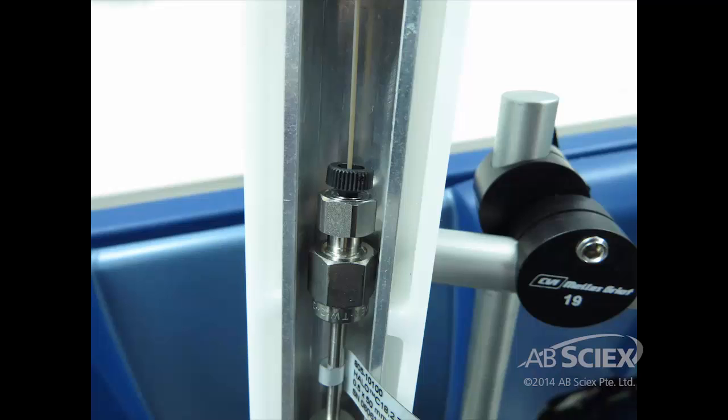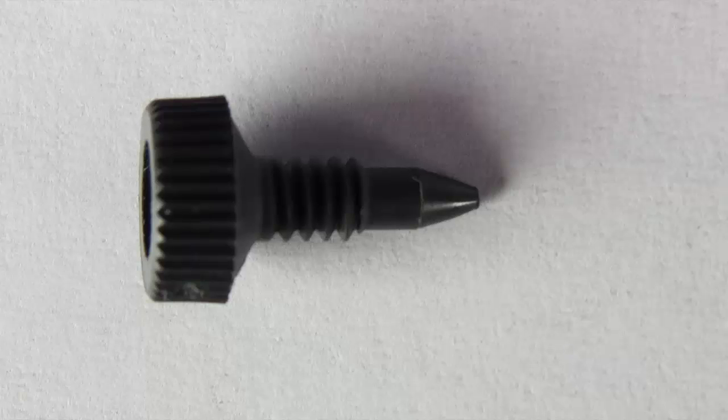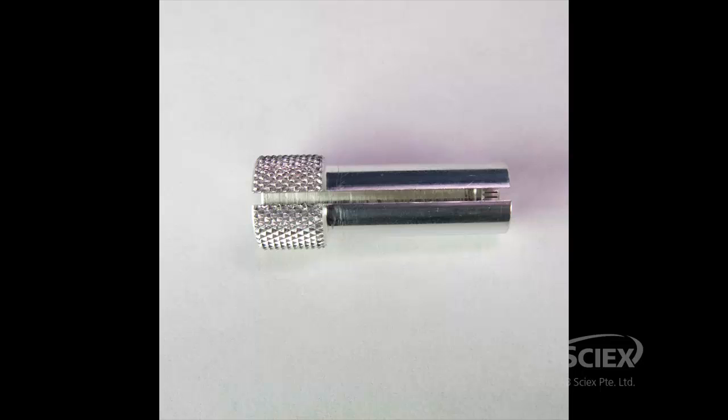Connect the other end of the peak seal tubing to the column using a peak fitting, part number 200-00342, and tighten using the large tightening tool, part number 200-00356.